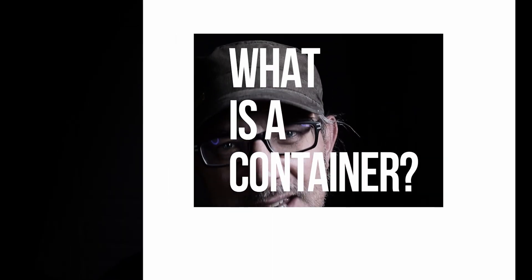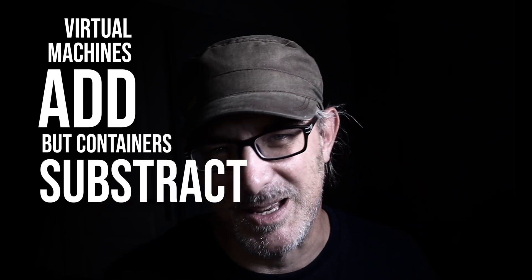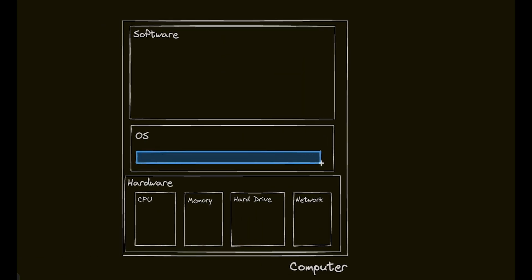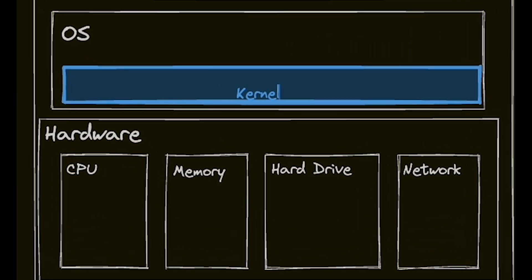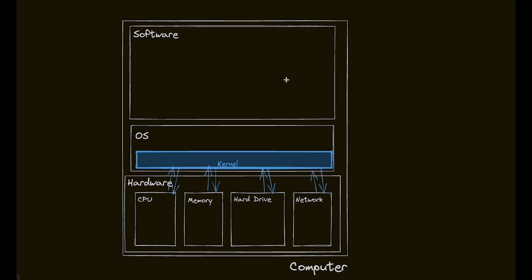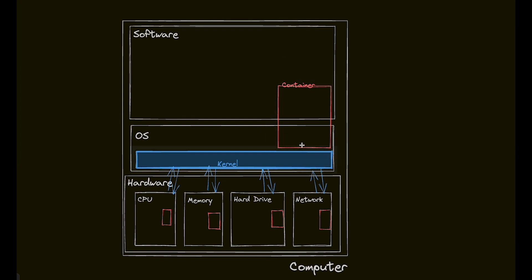Let's look at exactly what containers are and how they improve on virtual machines. In a nutshell, virtual machines add, but containers subtract — they take a slice out. Getting back to our computer with its three layers: if we dive into the operating system layer, it too has layers with different roles. The deepest layer, the kernel, interfaces directly with the hardware. A container is a walled-off slice of the environment which sits on top of the kernel. It has its own personal but limited share of memory, hard drive, and CPU processes. It can't see the rest of the environment — it can't access any part of the file system, memory, or processes that don't belong to it.